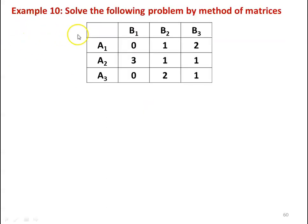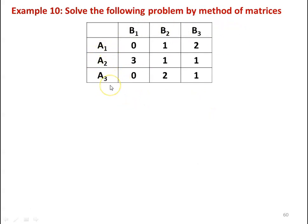We take example number 10: solve the following problem by the method of matrices. We have three strategies for player A and three strategies for player B. A1, A2, A3 are the strategies for player A; B1, B2, B3 are the strategies for player B. The payoff matrix values are: row A1: 0, 1, 2; row A2: 3, 1, 1; row A3: 0, 2, 1.